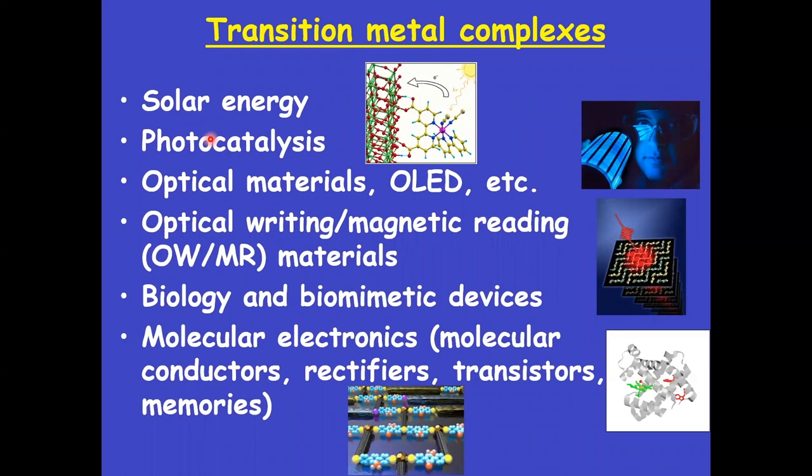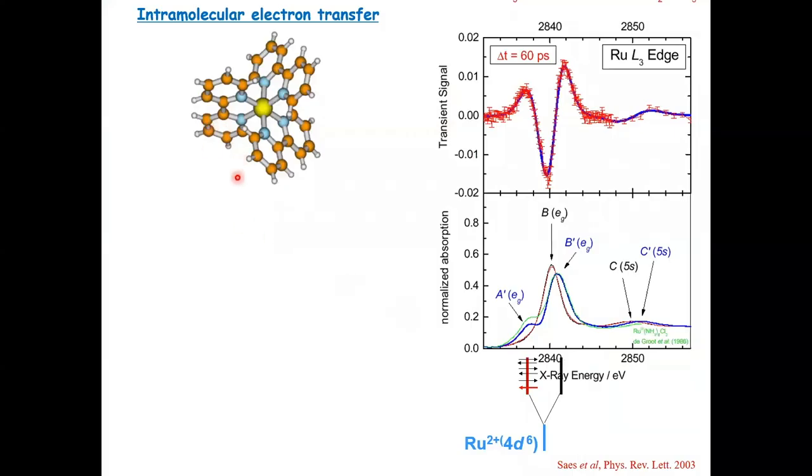The first series of measurements we did were on transition metal complexes. Why transition metal complexes? Apart from numerous applications or potential applications, they're involved with solar energy, photocatalysis, optical materials, OLEDs, optical writing, magnetic reading, and so on. They are nice because they have absorptions in the hard X-ray regime. The first experiments we implemented were done in air or in a helium atmosphere. But there is rich chemistry and physics underlying these systems, and I will show you some examples.